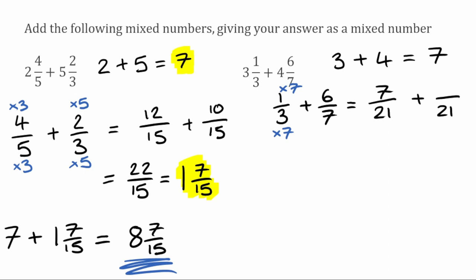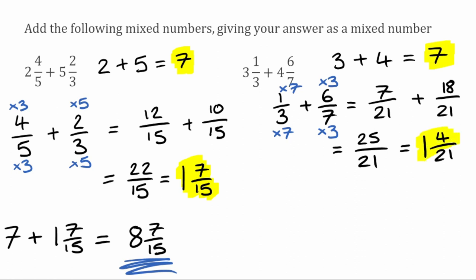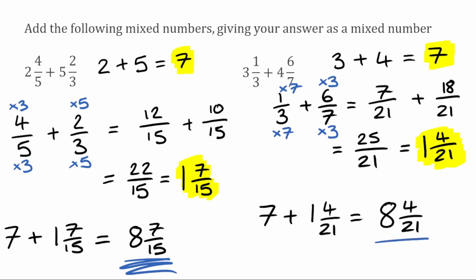For this seven, to make twenty-one we'd multiply by three, and do the same to the top: six times three gives us eighteen. So adding seven over twenty-one add eighteen over twenty-one gives us twenty-five over twenty-one. We've got an improper fraction, so we convert: twenty-one goes into twenty-five once with a remainder of four, giving us one and four over twenty-one. Adding our two bits — seven and one and four over twenty-one — we get eight and four over twenty-one.